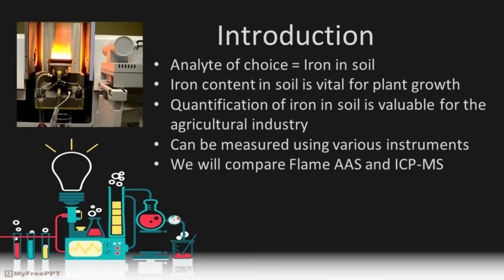Iron is not only an important nutrient in the human body but it also plays an important role in plants. Iron is taken up from the soil around plants and is used to transport oxygen and enables many enzymatic functions. A lack of iron, known as chlorosis, leads to drooping yellow leaves and decreased yields. For this reason, iron content of soil can be highly valuable information to the agricultural industry, and as such instrumental analysis of iron in soils has become common practice.